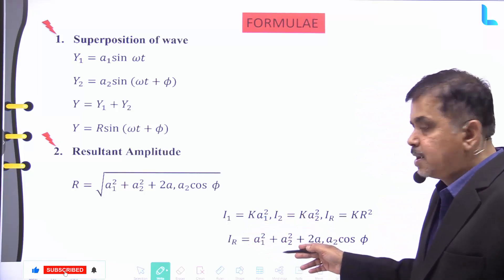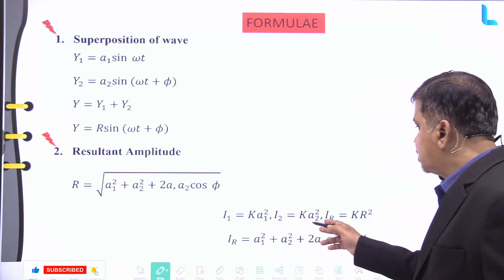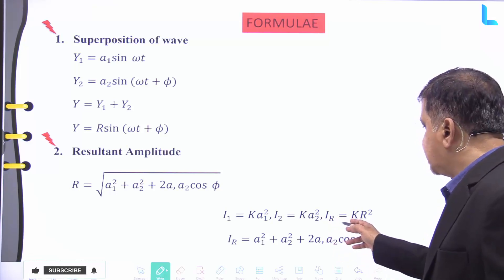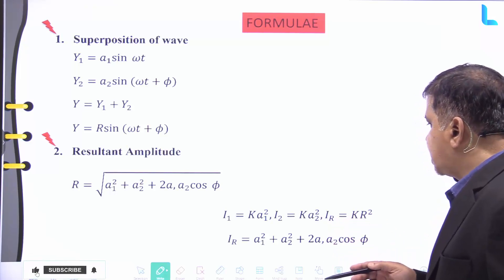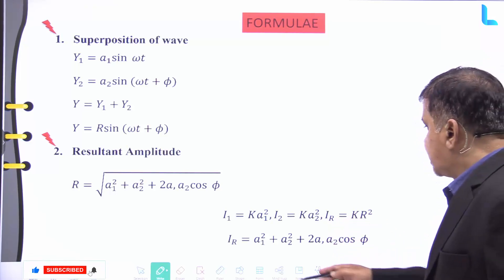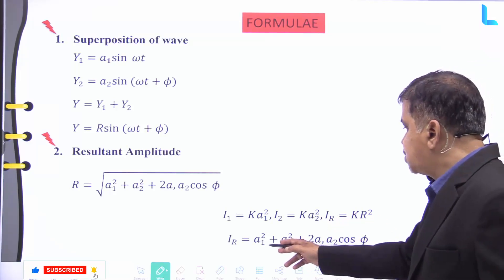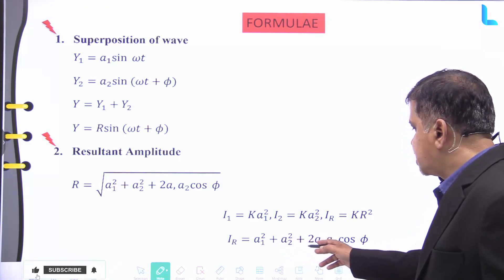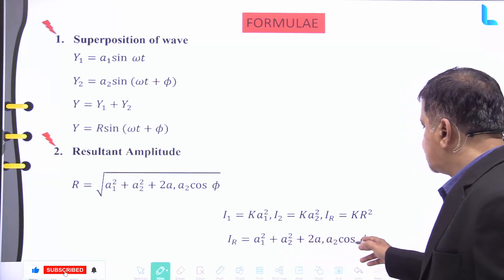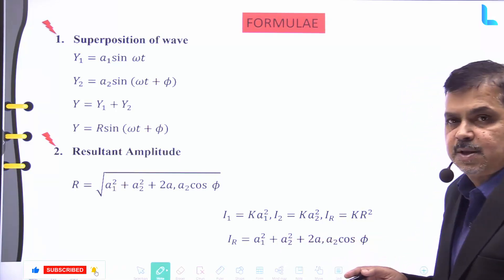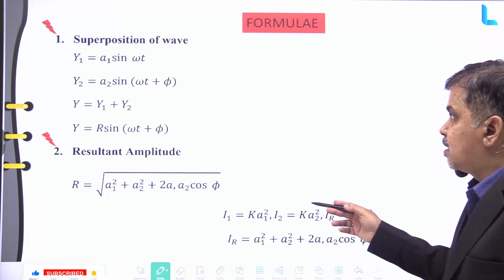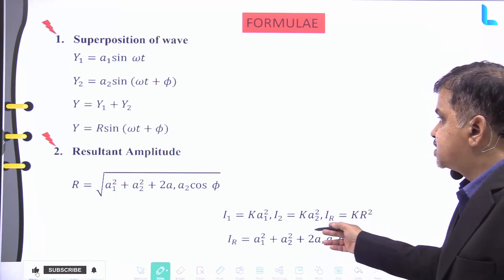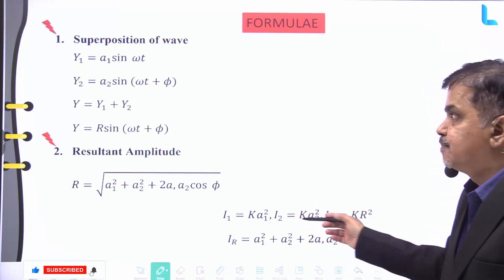Also, I1 = ka1², I2 = ka2², and the resultant intensity IR = kR², where IR = a1² + a2² + 2a1a2 cos φ, and all notations have their usual meanings.